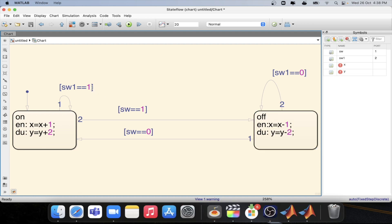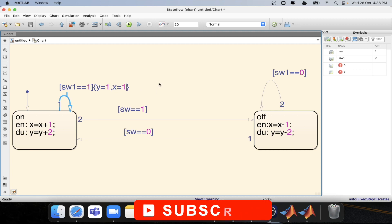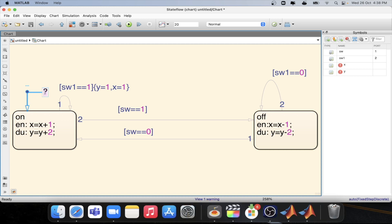And in the self-transition we will be defining the outcome here y equal to 1. And again x equal to, here we have defined y equal to 1 and x equal to 1 which is basically to reset the whole thing. And in the default transition we will be defining x equal to 1 and y equal to 1. And in here we will be again doing the reset for x and y.